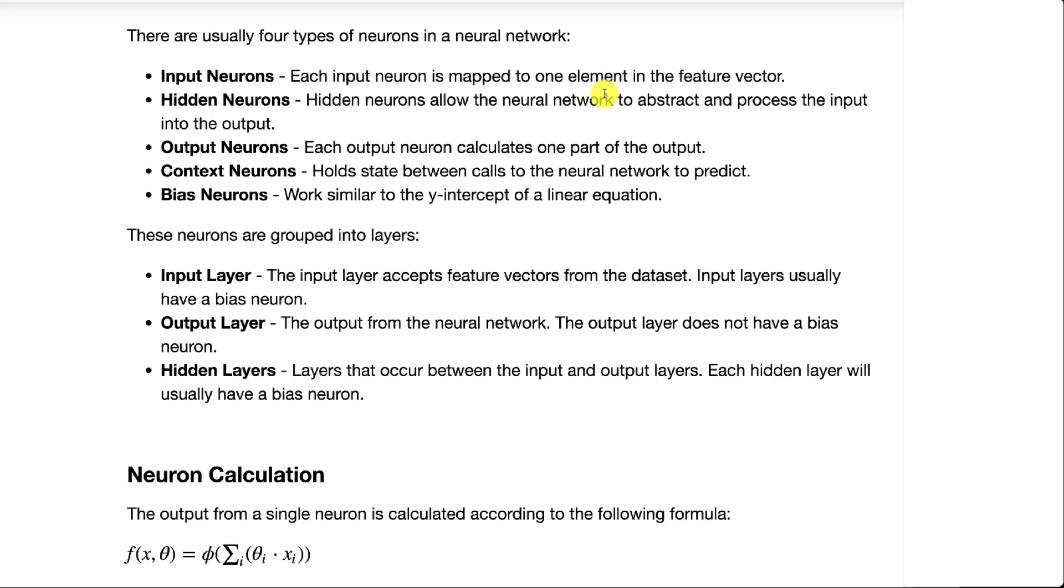Input neurons receive the input for the neural network. Output neurons receive the output that are sent out of the neural network. Hidden are between that.